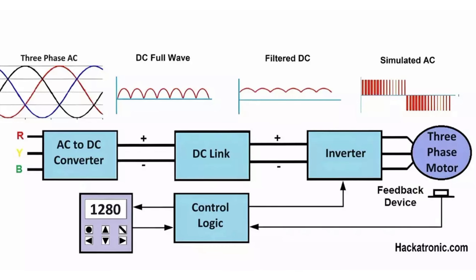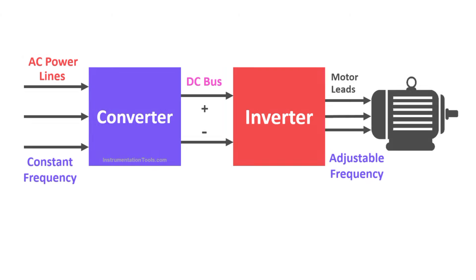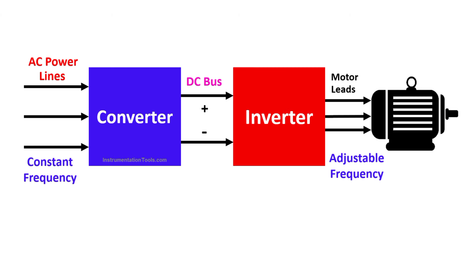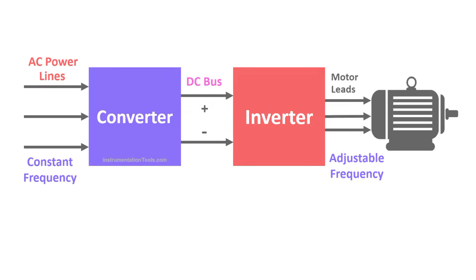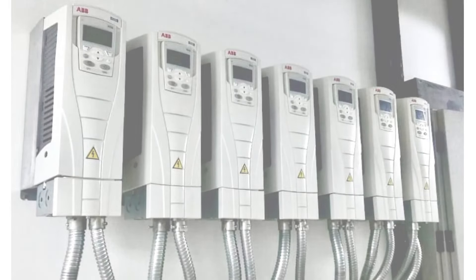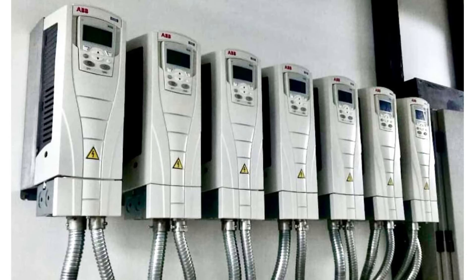In the third step — modulation — the inverted output is modulated to produce a variable frequency output. In the final step, the variable frequency output is fed to the motor, controlling its speed.